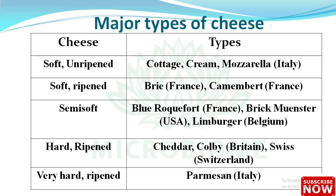Major types of cheese: soft unripened — cottage, cream, and mozzarella; soft ripened — brie and camembert; semi-soft — blue roquefort, brick minster, limburger; hard ripened — cheddar, colby, swiss; very hard or ripened — parmesan.